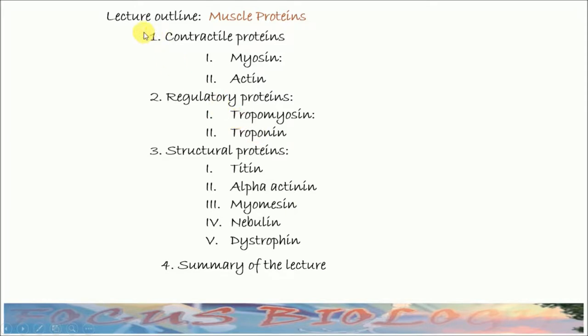In this video, I am going to describe different proteins that are involved in muscle contractions. This is my lecture outline: muscle proteins, contractile proteins including myosin and actin, regulatory proteins including tropomyosin and troponin, structural proteins including titin, alpha-actinine, myomacin, nebulin, and dystrophin, followed by a summary of the lecture.